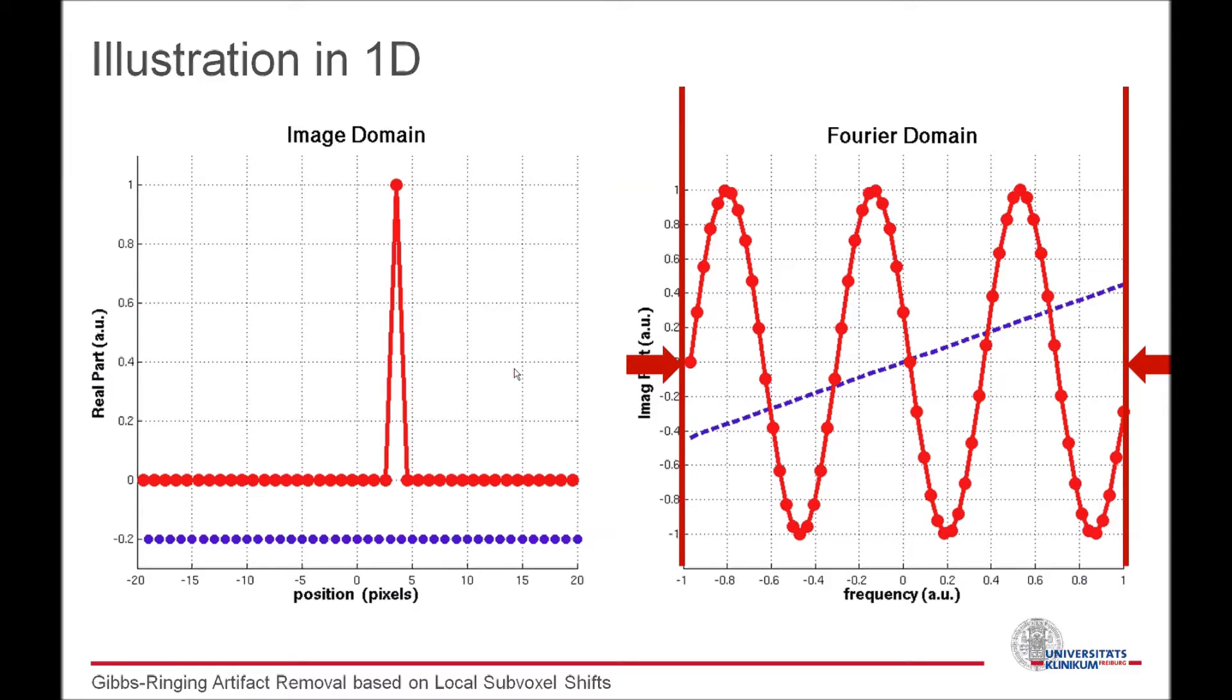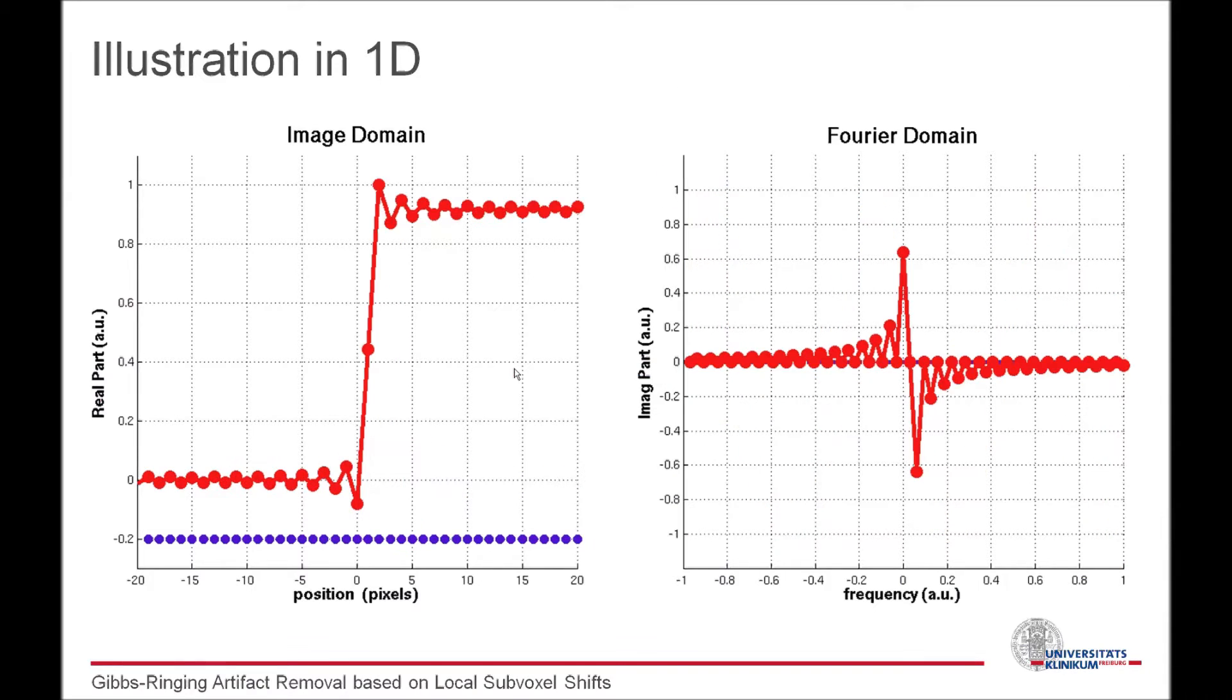Of course, in the real world we are not only faced with simple delta peaks. The next complicated object might be an edge. Even though the situation in k-space here is not so intuitive, the concept also works. In this example with the edge, you can see that there is an ideal position of the edge where there is almost no ringing. In this case it is not on a grid point, but right in between the middle of two points. So with the same approach we can remove that ringing artifact for edges also.